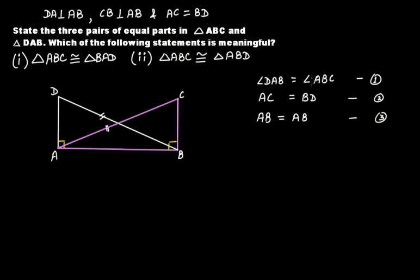So we have three pairs of equal parts. Now the second part of the question asks which of the following statements is meaningful: triangle ABC is congruent to triangle BAD, or triangle ABC is congruent to triangle ABD. Pay close attention to the word 'meaningful.'